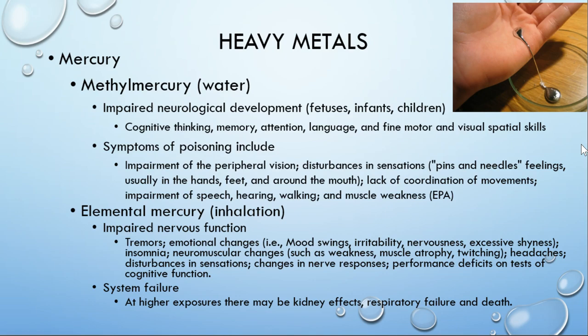Methylmercury causes impaired neurological development. It is especially bad in infants, children, and fetuses — affecting thinking, memory, attention, language, fine motor, and visual-spatial skills. When you look for symptoms of mercury poisoning, you get neurological impairment similar to stroke symptoms: difficulties with speech, difficulty walking, muscle weakness, weird sensations, and visual impairment.